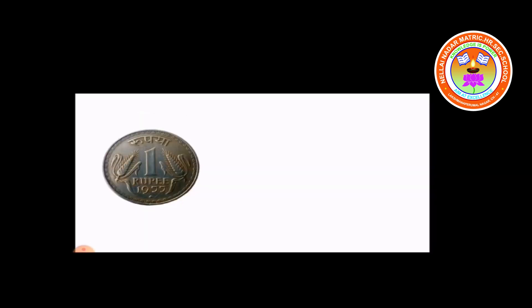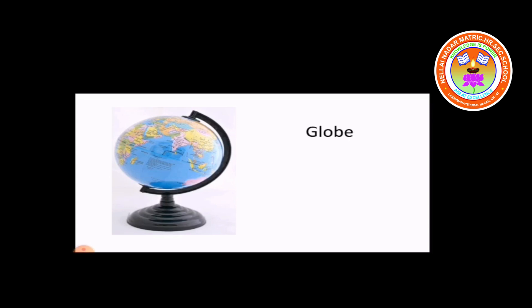What is this? This is a 1 rupee coin. Is it 2D or 3D shape? Very good — this is a 2D shape. What is this? This is a globe. Is it 2D or 3D shape? This is a 3D shape.